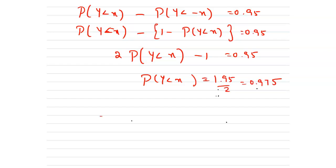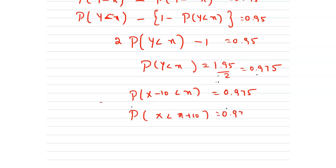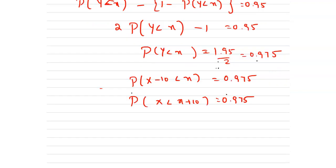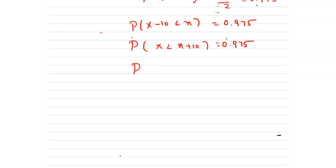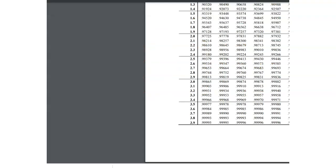By simplifying, p of y less than x equals 1.95 divided by 2, which is 0.975. Now we convert into the normal variable. Substituting back y equals x minus 10, we get p of x minus 10 less than x equals 0.975, so p of x less than x plus 10 equals 0.975. Converting to the z variable: p of (X minus mu) divided by sigma less than (x plus 10 minus 15) divided by 2 equals 0.975.